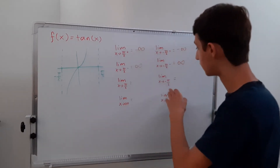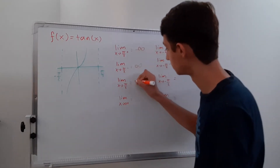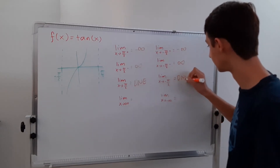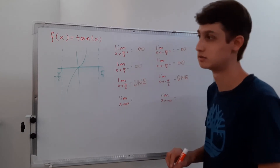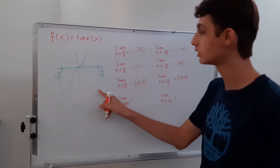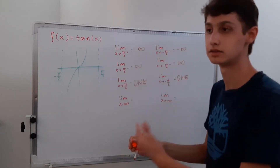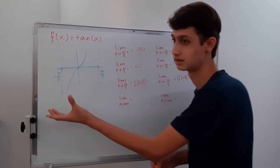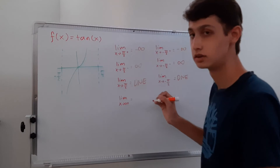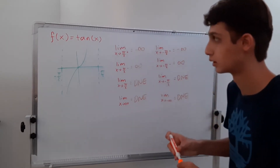Now for the two-sided limits at pi over two and negative pi over two: are they the same? No — infinity is not negative infinity. So these limits do not exist. How about x approaching positive and negative infinity? These are weird because you can only go to pi over two at the maximum and negative pi over two at the minimum in one period. You only have this little range of pi. So you can't get to infinity, and these two don't actually have an answer. Technically they do not exist.